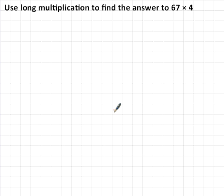Use long multiplication to find the answer to 67 × 4. Before I even begin this calculation, I'm going to find an estimate for the answer. 67 is roughly equal to 70, and 70 multiplied by 4 is equal to 280.